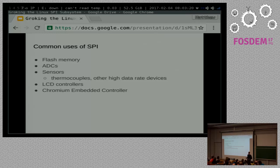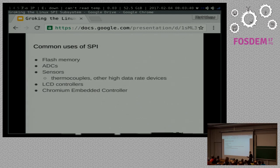So what are some common uses? Pretty much everywhere, but just to highlight a few: flash memory — you often find serial flash devices. Why? Low pin count, same reason you see I2C EEPROMs for non-volatile storage. Huge advantage with that low pin count in embedded systems. The same reasons drive its use with analog-to-digital converters.